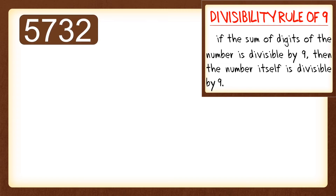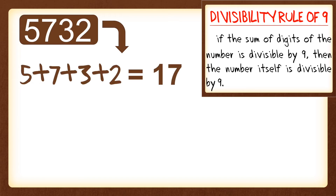So I have here 5,732. Get the sum of the digits. So to get the sum: 5 plus 7 plus 3 plus 2. And if we add the four numbers, we'll get the number 17.